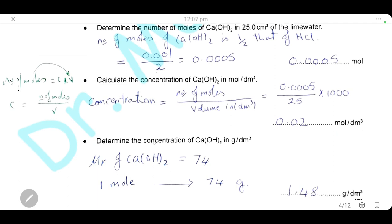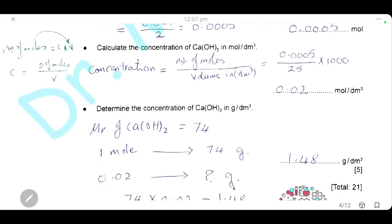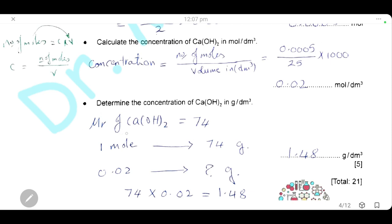Finally, convert the concentration from mol/dm³ to g/dm³. Calculate the Mr of calcium hydroxide: Ca(OH)₂ = 40 + 2×(16+1) = 74 g/mol. So 1 mole = 74 g, and 0.02 moles = 0.02 × 74 = 1.48 g. Therefore, the concentration of calcium hydroxide is 1.48 g/dm³.